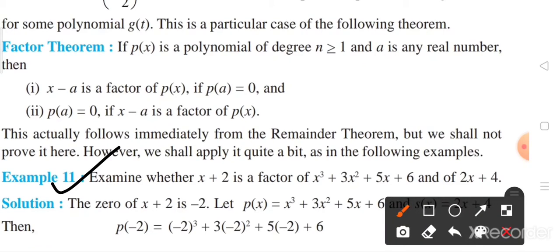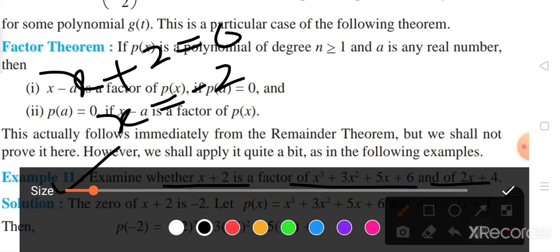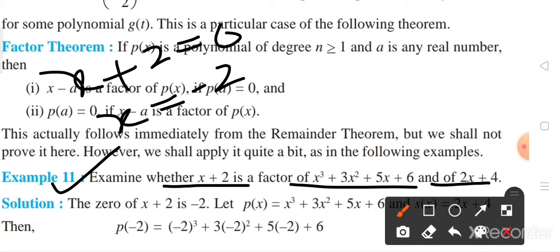Here, examine whether x plus 2 is the factor of this polynomial and of this. So, let us first place x plus 2 equal to 0. Now, get the value of x from here: minus 2.